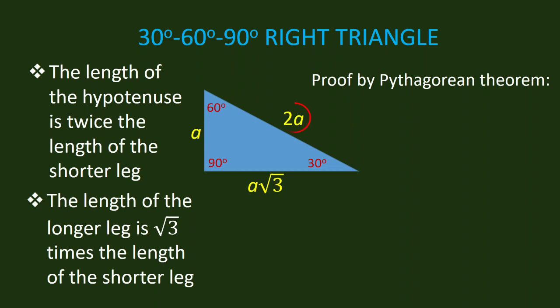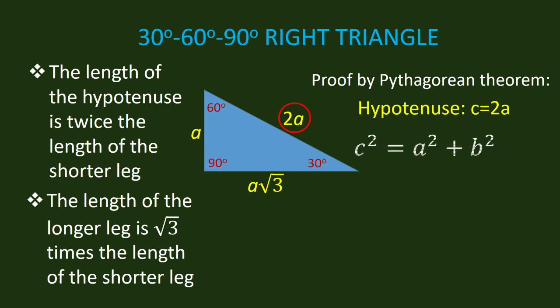Furthermore, we can prove that the hypotenuse is twice the shorter leg — that is, C is equal to 2A. Let us use the Pythagorean theorem and substitute the values of A and B, the shorter leg and the longer leg. We want to prove that C is really 2A. The shorter leg is A, and the longer leg B is A times square root of 3. Simplifying, we have C equals 2A.